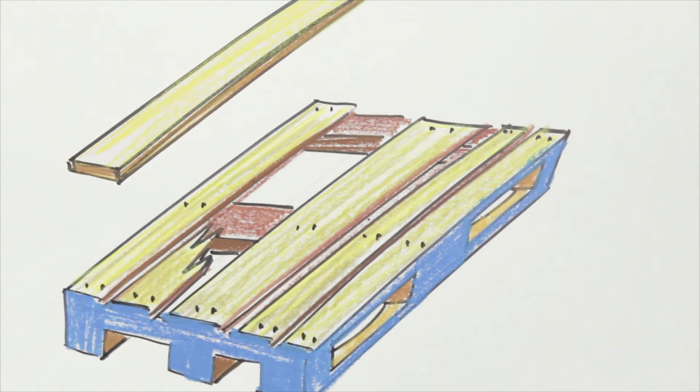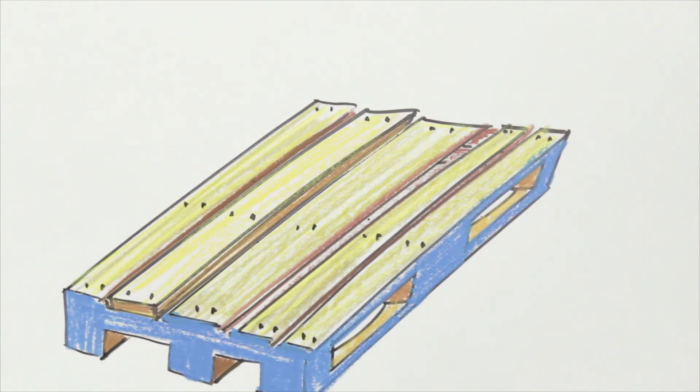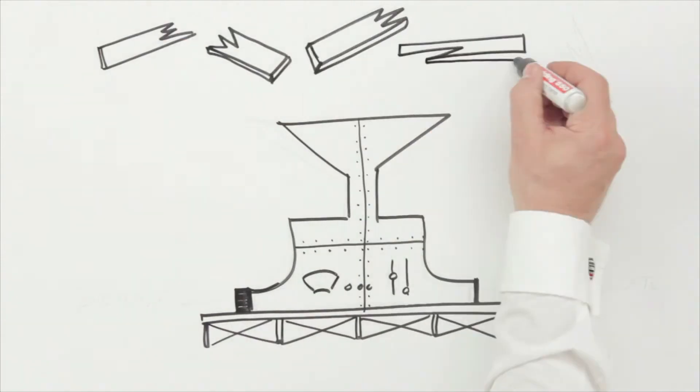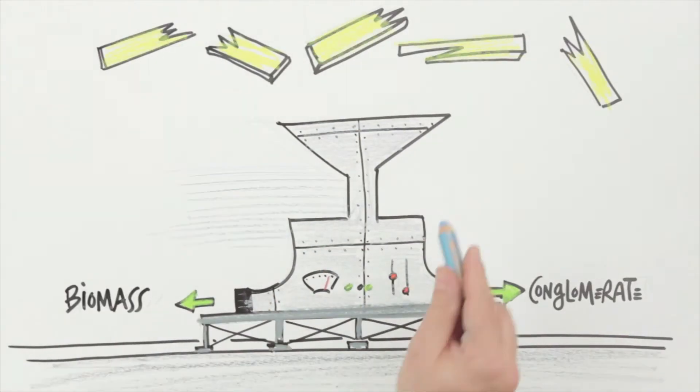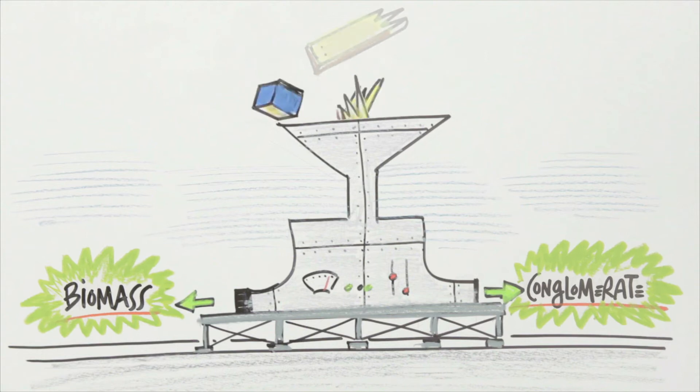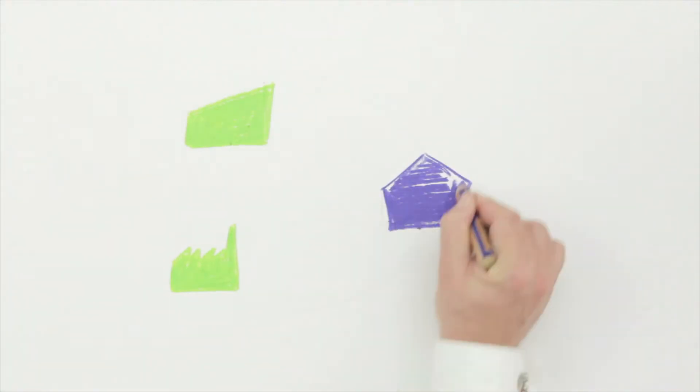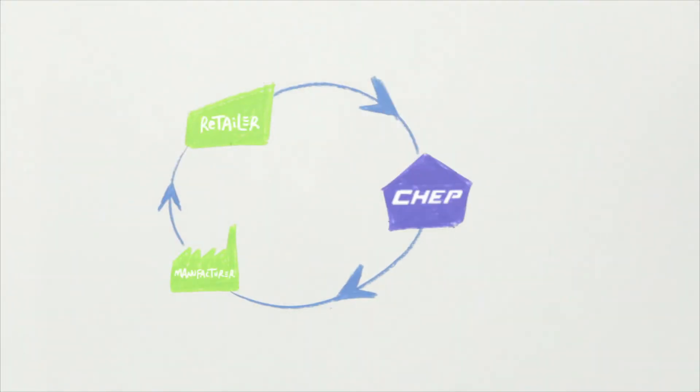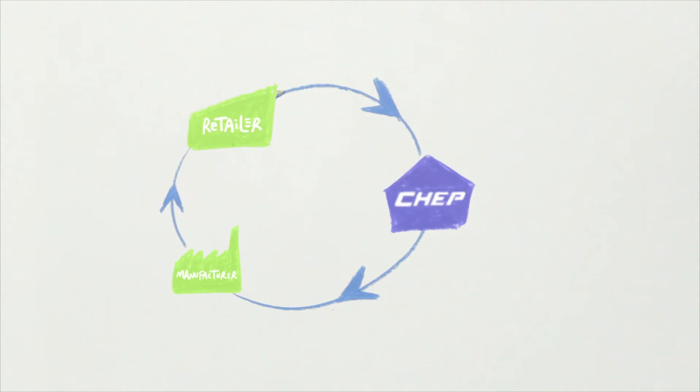And the waste becomes material for new uses, so there's almost no waste at all. Our solutions are just like the circular model. Our pallets are used over and over again, but we don't stop there.